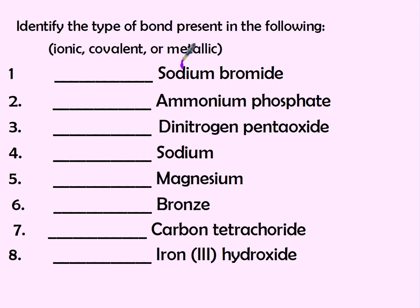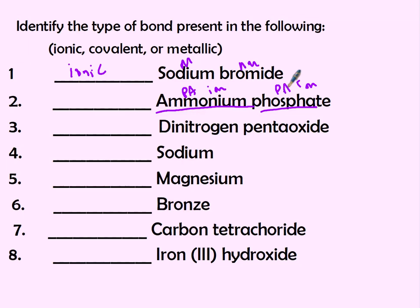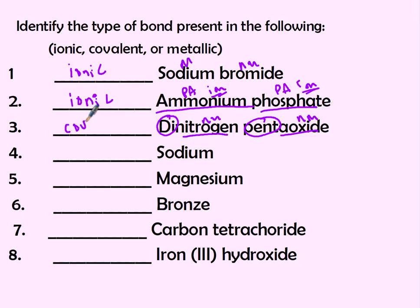The first one has a metal and a non-metal, so that should have been ionic. Ammonium is a polyatomic ion and phosphate is a polyatomic ion, so we have two ions — that would also be ionic. The next one has prefixes and also a non-metal and a non-metal.